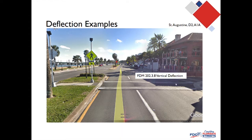Here's a milder example of vertical deflection on A1A in St. Augustine in District 2. This is not quite a speed hump or a raised sidewalk, but there's a little bit of elevation that you do feel as you drive over it. The point is that there's a range at which you can do these things — you can raise it six inches for maximum effect, or just a couple of inches to signal that pedestrians will be crossing. This is an example on a state road of using some vertical deflection.